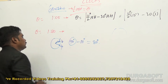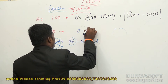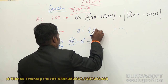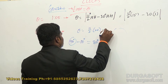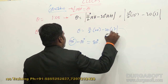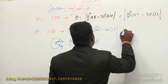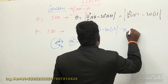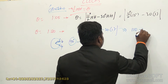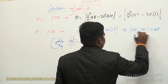By applying the formula: theta = 11/2 into 20 minus 30 into 1. You get 2 into 1 and 2 into 10 — here it is 10 into 11, that is 110 minus 30. You can get the answer 80 degrees.